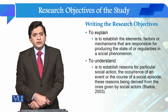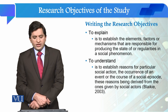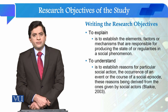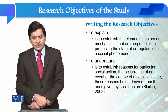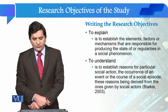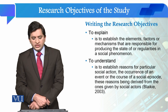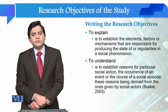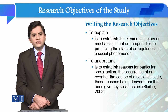The third level of research objective is 'to explain.' We use this when we have to establish the elements, factors, or mechanisms responsible for producing the state or regularities of social phenomena. Similarly, we use the phrase 'to understand' when we have to establish reasons for particular social actions, occurrence of an event, or the course of a social episode — reasons derived from social actors — یانی کسی social problem کے پیچھے کون سے factors contributing ہیں۔